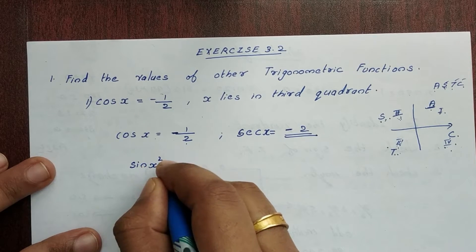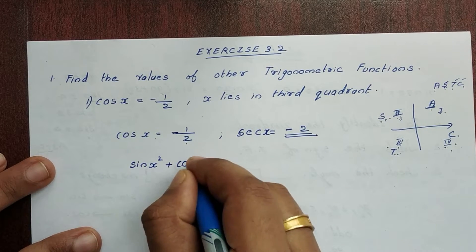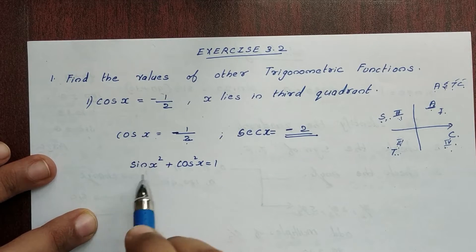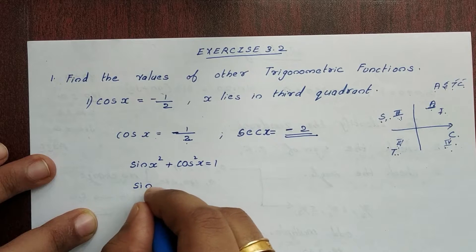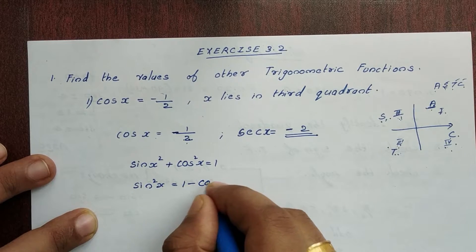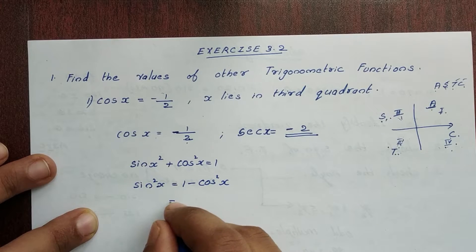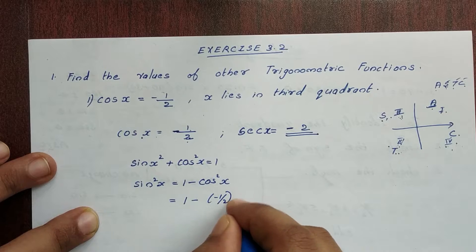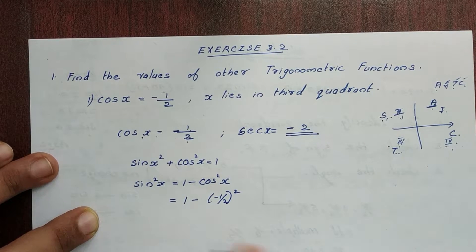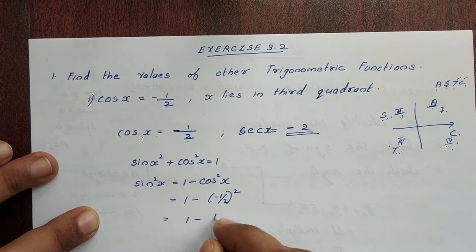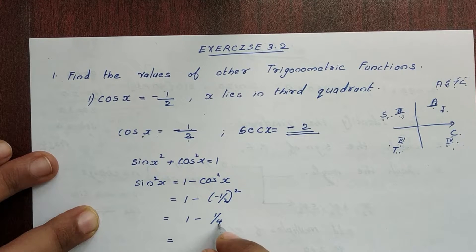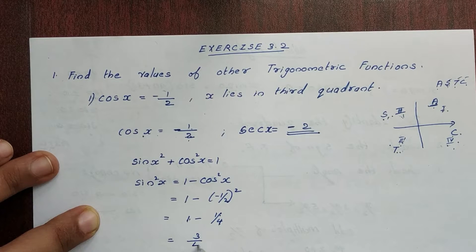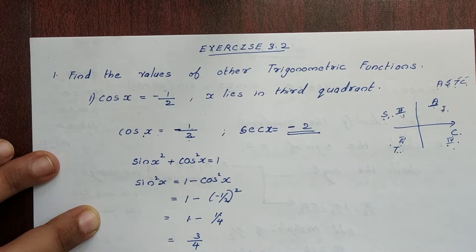We use the identity: sin²x plus cos²x is equal to 1. So sin²x is equal to 1 minus cos²x. That is 1 minus (−1/2)², which equals 1 minus 1 by 4.